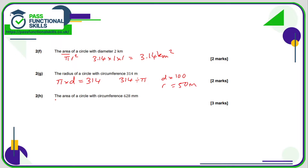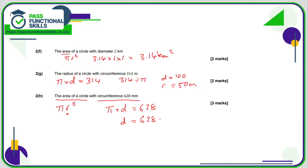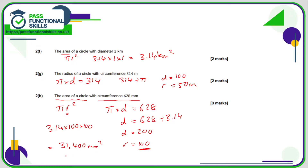2h is quite tricky — we want to work out the area of the circle using pi r squared, but first we need to find r. We know the circumference is 628, and circumference equals pi times the diameter, so the diameter is 628 divided by 3.14, which is 200. Therefore the radius is 100. So the area is 3.14 times 100 times 100, which gives 31,400 square millimetres.